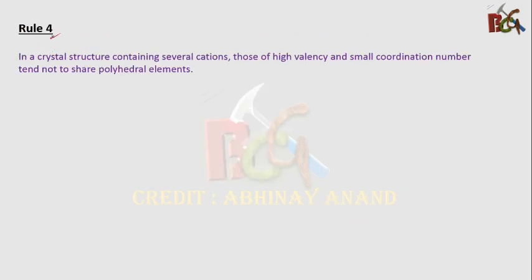Rule number 4 states: in a crystal structure containing several cations, those of high valence and small coordination numbers tend not to share polyhedral elements with each other.